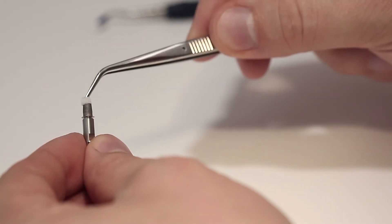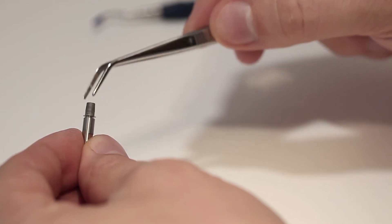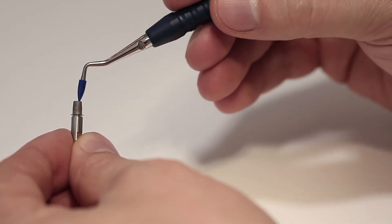Seal the screw channel with a foam pellet or wax. Be careful not to contaminate the bonding surface.